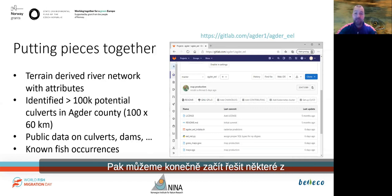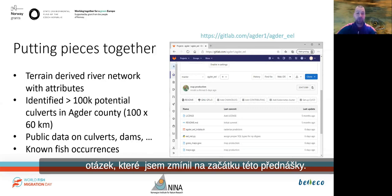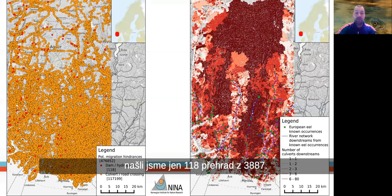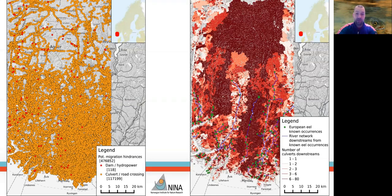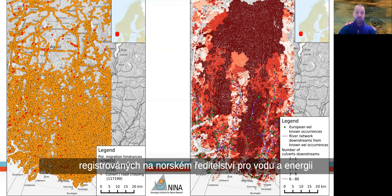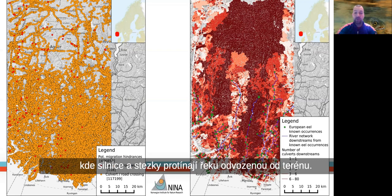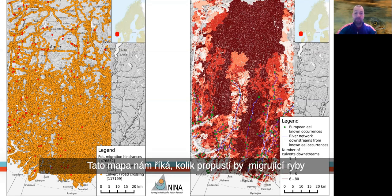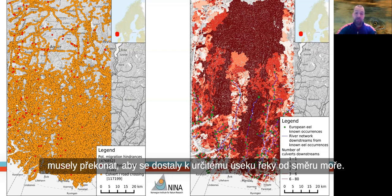We can then finally start addressing some of the questions I mentioned at the beginning of this talk. As you can see on the map on the left, we found only 118 dams of the 3,887 registered in the Norwegian Water and Energy Directorate within our study area. However, we identified more than 100,000 locations where roads, tracks and trails cross the terrain-derived river network. Utilizing network analysis, we can count how many potential culverts are located downstream from a given river segment, as illustrated in the map on the right — this tells us how many culverts a migratory fish would have to cross to reach a particular river section coming from the sea.